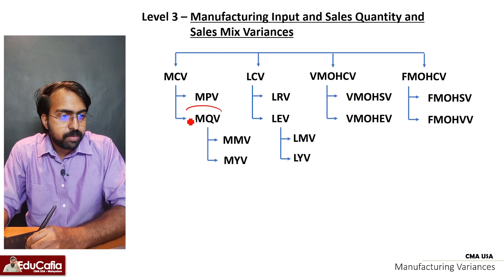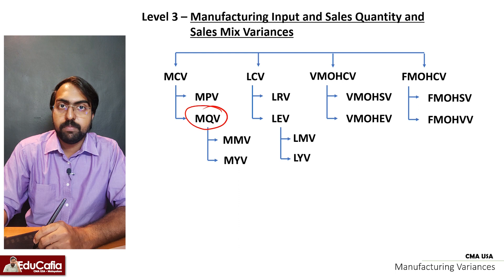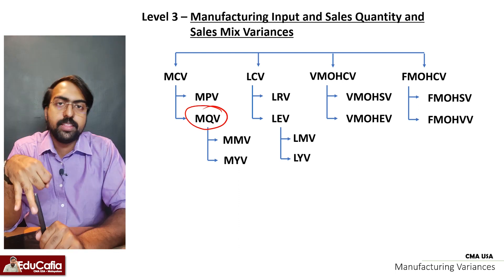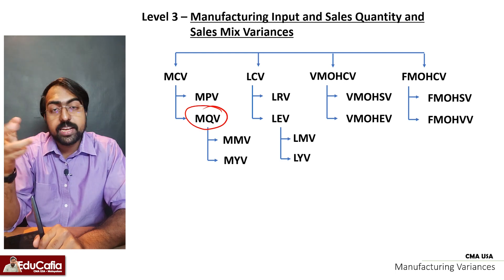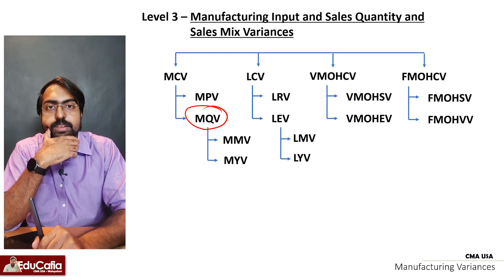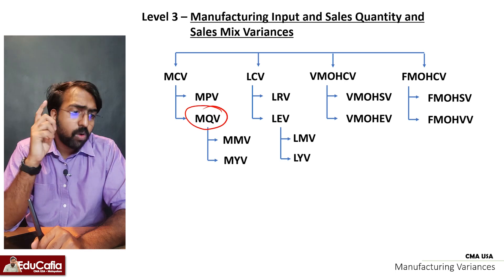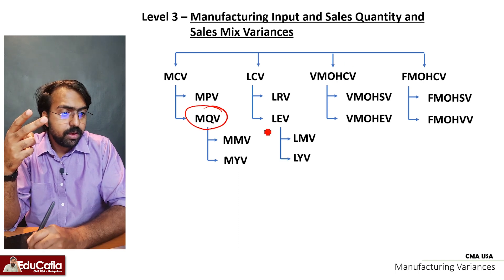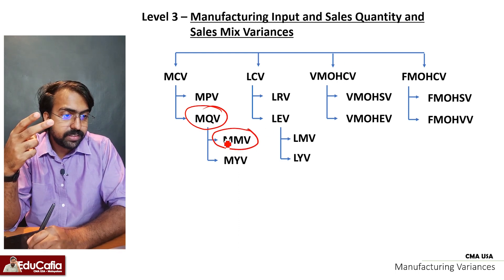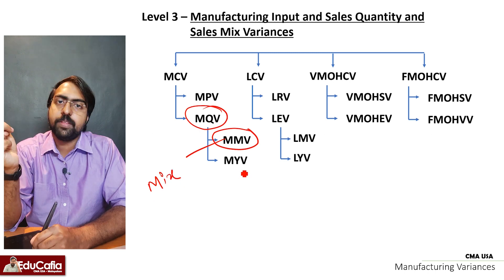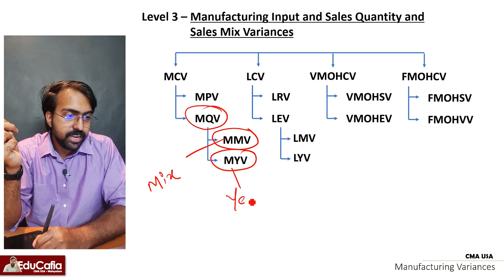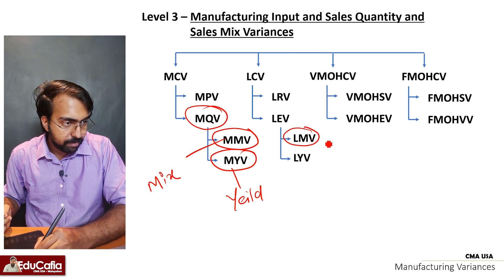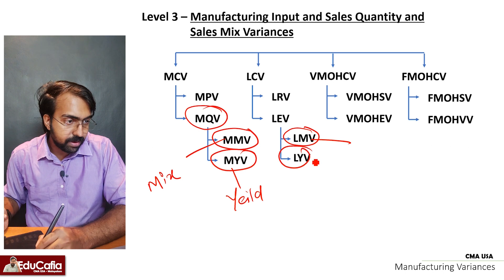We also call it the material rate — price and quantity. It's a quantity rate. I have two variants of material: mix and yield variance. This is the material mix and the material yield variance. Also, the labor mix and the labor yield variance.